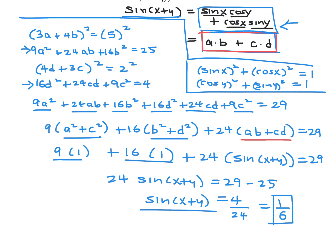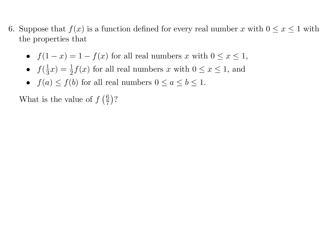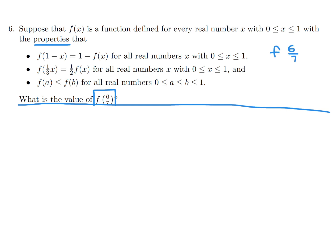Suppose f(x) is a function defined for every real x between 0 and 1 inclusive, with three properties: f(1 − x) = 1 − f(x), f(x/3) = (1/2)f(x), and f is non-decreasing (f(a) ≤ f(b) for 0 ≤ a ≤ b ≤ 1). What is the value of f(6/7)? We'll use these three properties to find f(6/7).